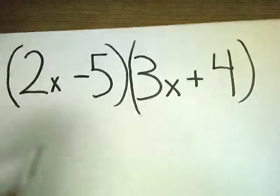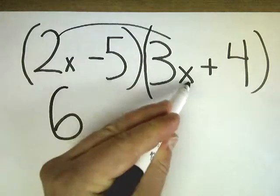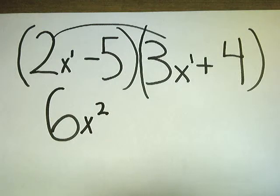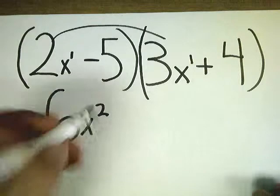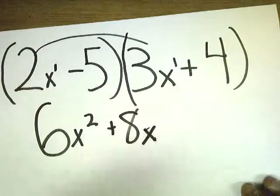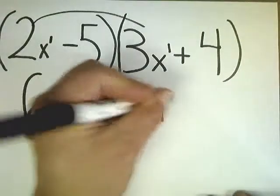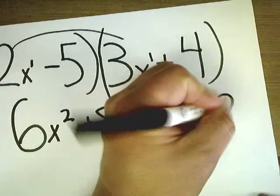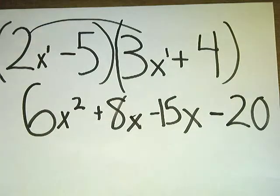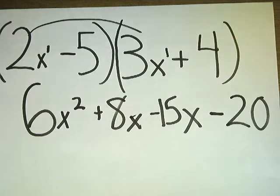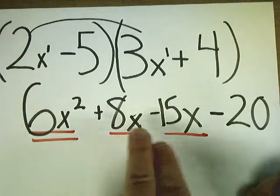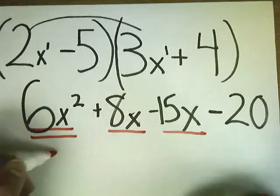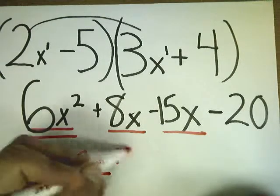So foil would be front, so that would be 2x and 3x. 3 times 2 is 6. I've got 2 x's there, so that screams x to the second power. Then I do outside. So I do positive 2x times 4, so that would be 8x. Then I do inside, negative 5 times 3x, which is negative 15x. Finally, I've got my last, negative 5 times 4 gives me negative 20. So 8 minus 15 gives me negative 7x. So my final answer is 6x squared minus 7x minus 20.